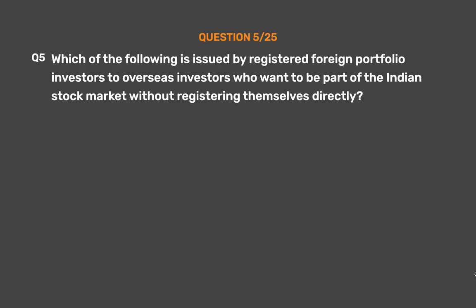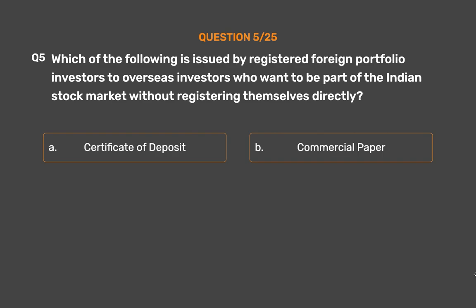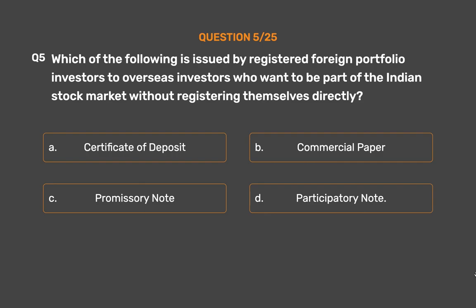Question No. 5: Which of the following is issued by registered foreign portfolio investors to overseas investors who want to be part of the Indian stock market without registering themselves directly? Option A: Certificate of Deposit. Option B: Commercial Paper. Option C: Promissory Note. Option D: Participatory Note.